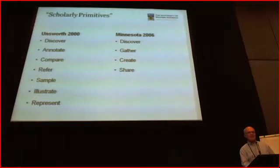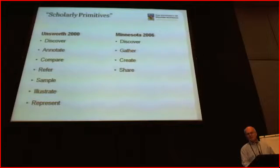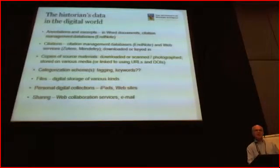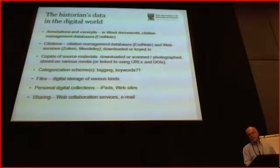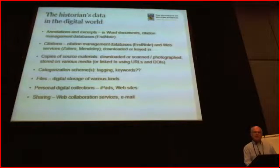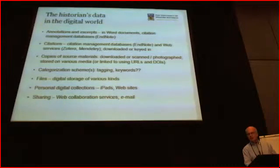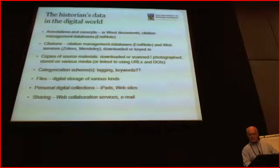There should be another slide that maps things like annotations, but you can do it as an exercise. Those kinds of data do map reasonably well to some scholarly primitives. The more interesting question is how much has really changed in the digital world. For the most part, although historians are now using software, databases, and downloading electronic rather than physical copies, the basic suite of data is much the same. The only major area where things have changed is the sharing side, because collaboration services now permeate all those other types of activities.